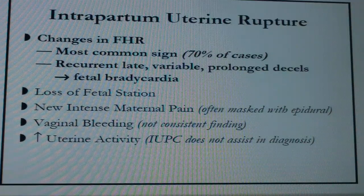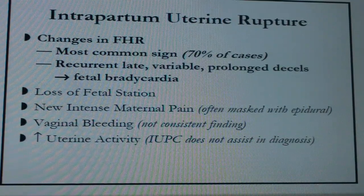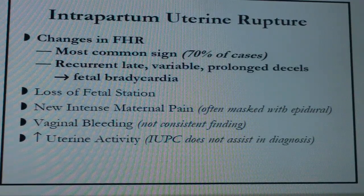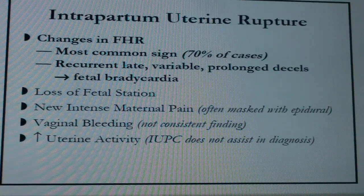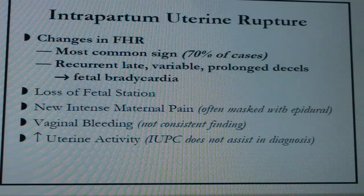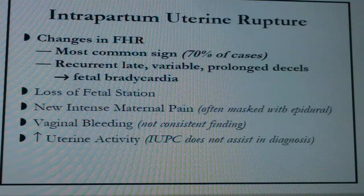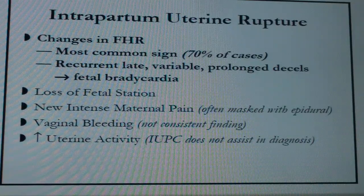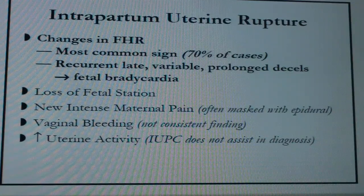Other signs of uterine rupture include loss of fetal station — the baby's head may go from engaged to floating back up, like if you broke a water balloon. There can be intense maternal pain, but patients with an epidural often won't feel it. Vaginal bleeding may or may not be present, because a high rupture may bleed into the intra-abdominal area rather than vaginally. You would also see increased uterine activity as the uterus tries to clamp down to stop the bleeding; an IUPC doesn't help with this diagnosis.